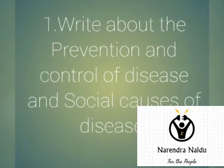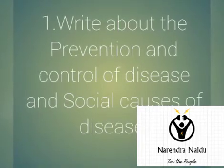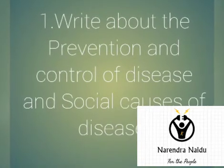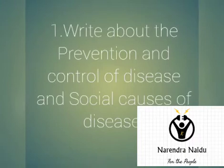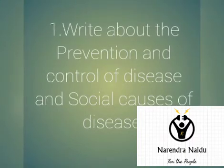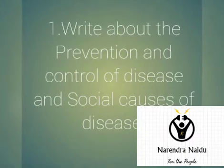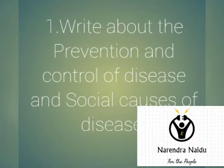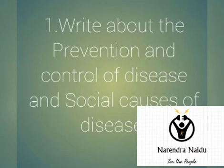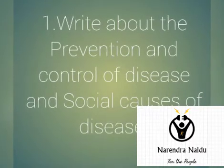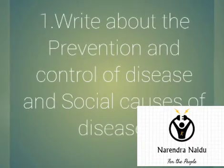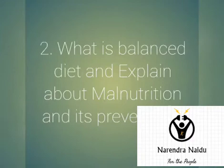The first question is: write about the prevention and control of disease, and write the social causes of disease. You have to write about how to prevent a disease, how to control the disease, and what are the socio-economical causes of a disease.